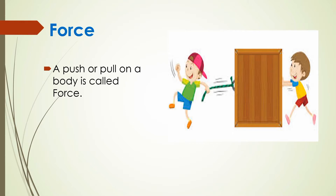In our everyday life, we observe that if any object is stationary, we have to put some effort to get it in motion, and if any object is moving and needs to be stopped, we have to push, pull, or hit the object so we can change the state of the object. This is the effect of force. We cannot see force or taste it — we can only feel the effect of force. Pushing, pulling, or hitting are all ways we can make any object move or stop.